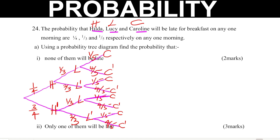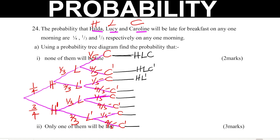Now we list all the probability outcomes from the branches to help answer the questions. The branches are: H, L, C; then H, L, C prime; then H, L prime, C; then H, L prime, C prime; then H prime, L, C; then H prime, L, C prime; then H prime, L prime, C; and finally H prime, L prime, C prime.